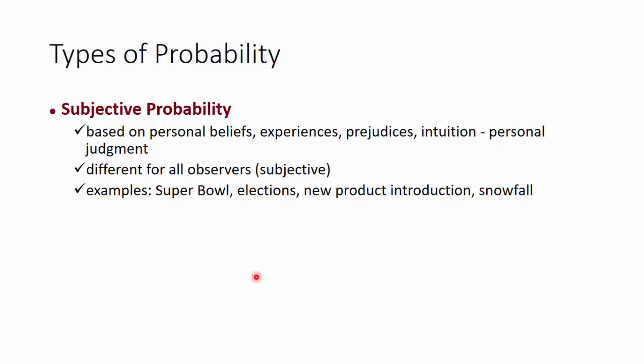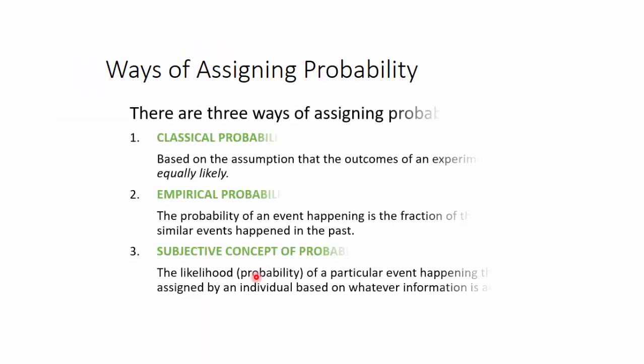Let's look at each one of them in detail. The three ways are classical probability based on equally likely, empirical based on past events or collection of data, and subjective based on one's own understanding and available information.